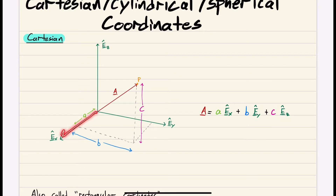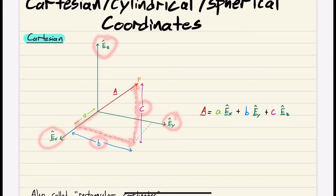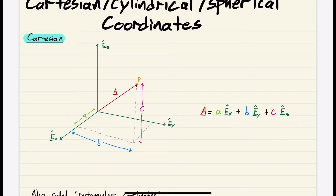We have our EX direction, EY direction, and our EZ direction. This makes our basis. To define vector A — the vector that points from the origin to point P — we travel some distance, in this case green A, along the EX direction. Then we travel a distance of blue B in the EY direction, and finally some distance pink C in the EZ direction. If we follow that path, we end up at point P. The vector written out would be: green A in EX, blue B in EY, and pink C in EZ — that gets us from the origin to point P.